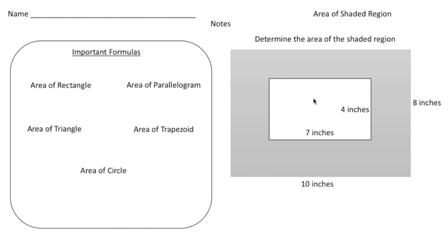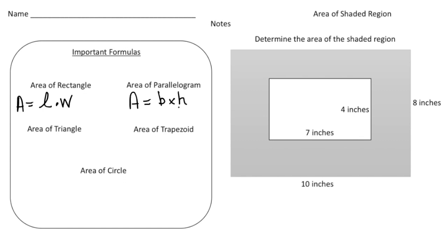All the problems we're going to focus on involve two-dimensional shapes. Let's quickly review some of the formulas you probably learned in class. To find the area of a rectangle, the area is length times width. To find the area of a parallelogram, the area is base times height. To find the area of a triangle, it's base times height, but then we divide it by two.